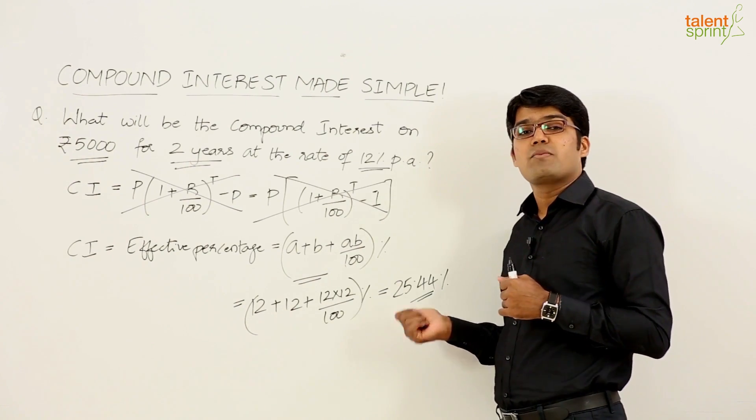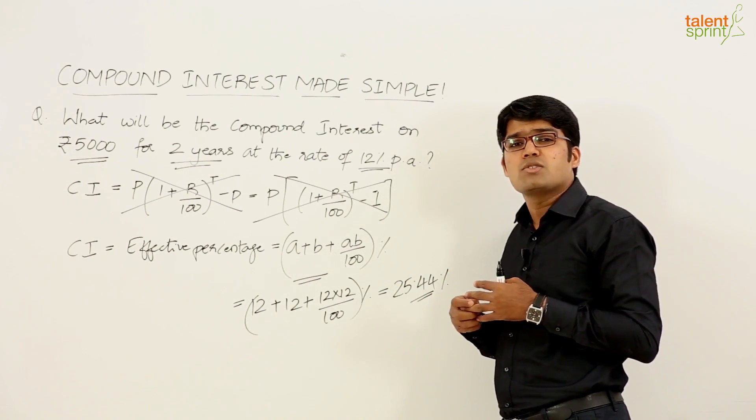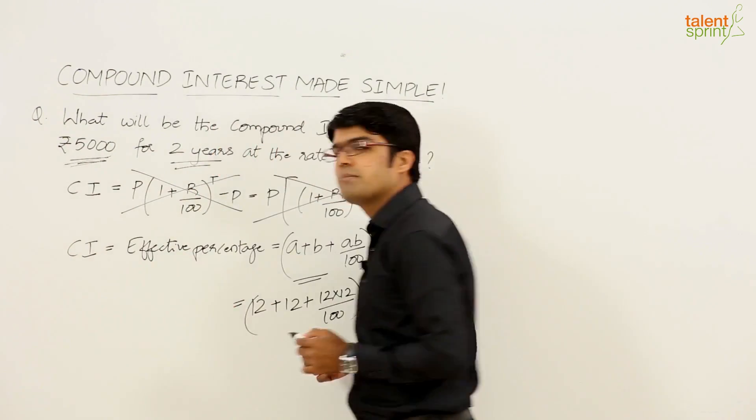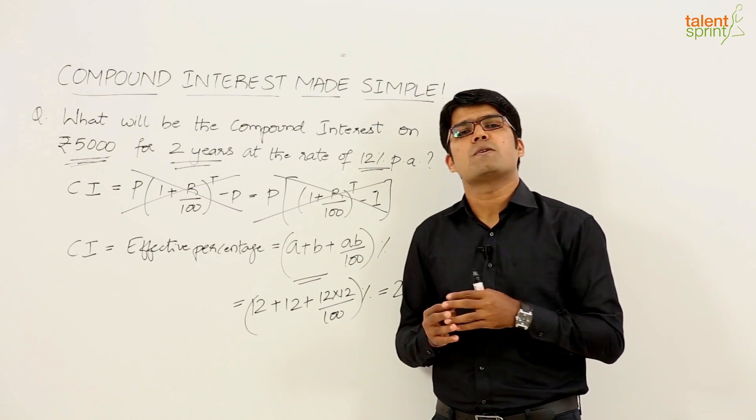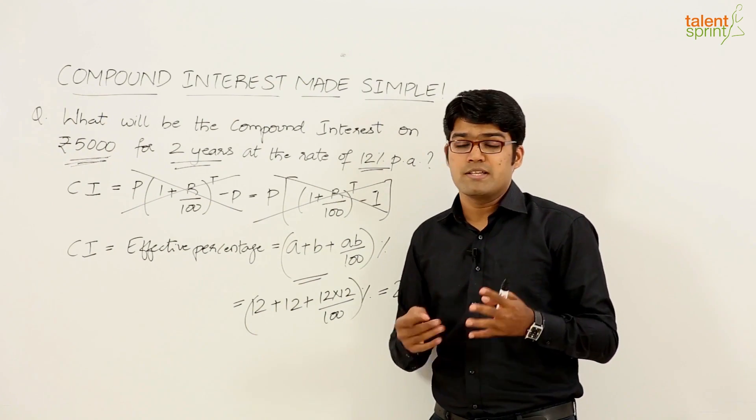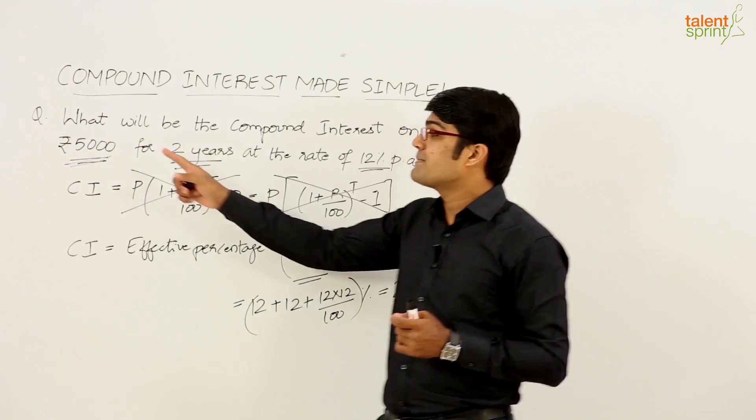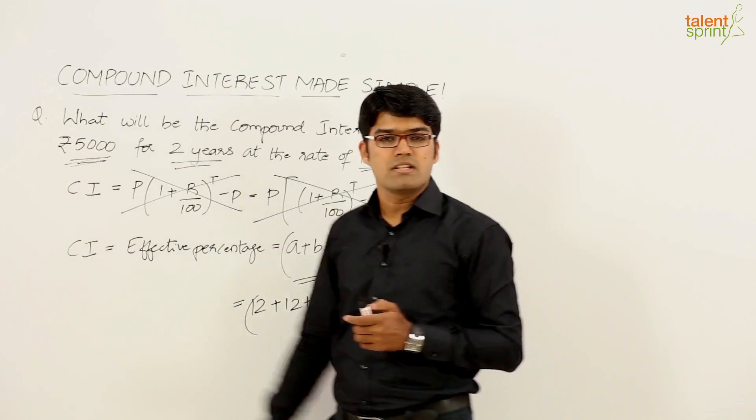Now the question that arises here is 25.44 percent of what? 25.44 percent of the given principal amount. Remember that in case of compound interest and also in case of simple interest, all the percentage calculations must be done with respect to the principal amount which is 5000 in the given case.